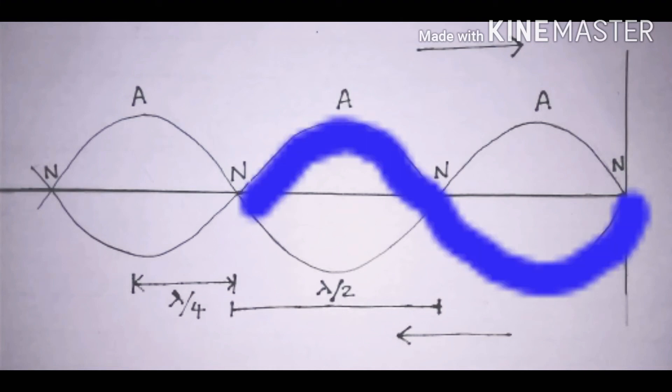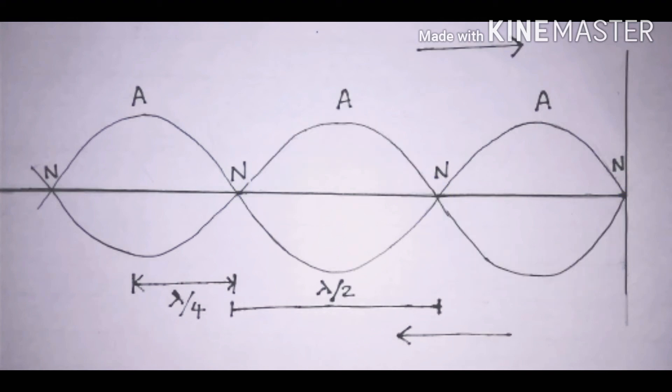The distance between two nodes or two consecutive antinodes is lambda by two. As you know, the wavelength of the wave is lambda, and the distance between two successive nodes or two successive antinodes, as you can see in the diagram, is lambda by two. And the distance between a node and an antinode is lambda by four.